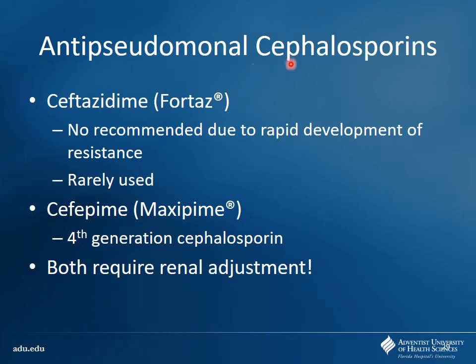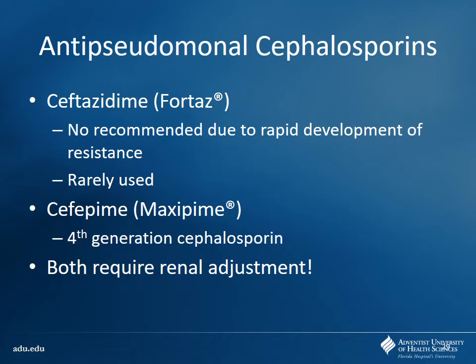For anti-pseudomonal cephalosporins, ceftazidime is not used commonly due to rapid resistance. The go-to is cefepime, the fourth-generation cephalosporin - a good option when worried about Pseudomonas. Remember these require renal dose adjustment. In septic patients, blood pressure drops and the body preferentially shunts blood to the heart and brain, causing kidney hypoperfusion and potential injury, so you must watch renal function closely.